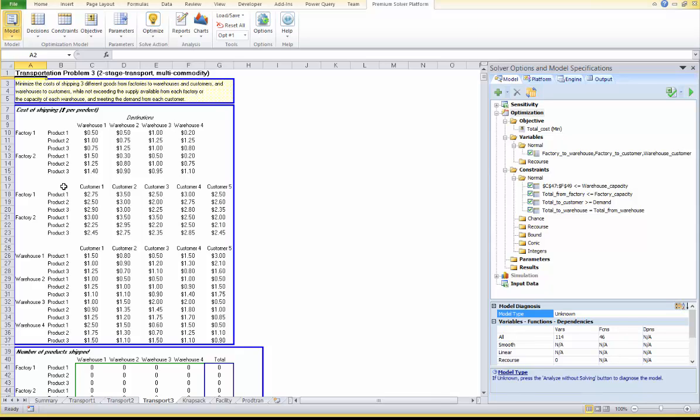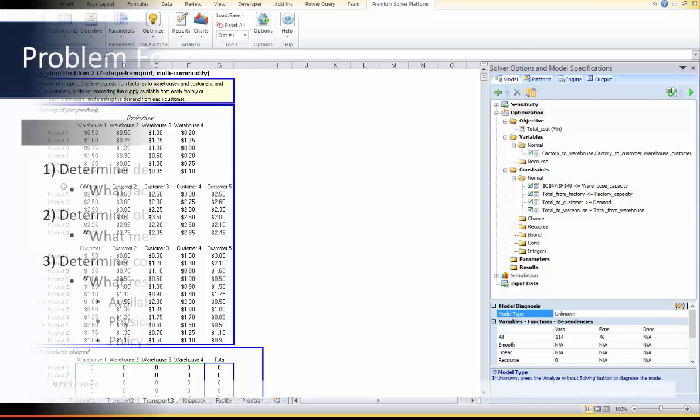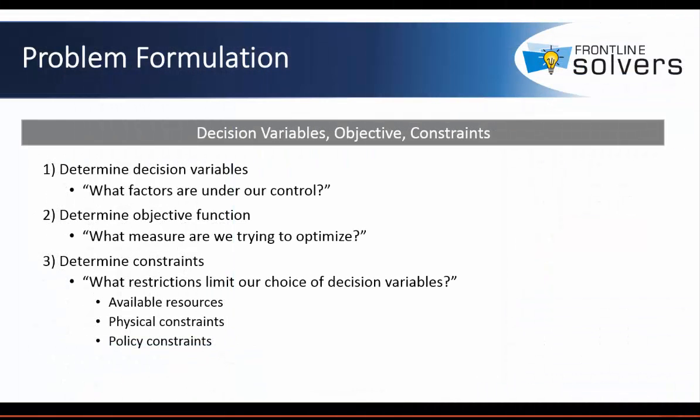There are two goals that need to be carefully addressed in these types of problems: total costs and service. We want to provide the service with minimum cost and ensure that each customer demand is completely satisfied. Now we need to formulate this problem, which means translating the verbal statement of a problem into the optimization language.